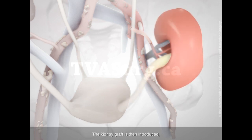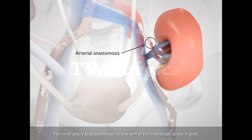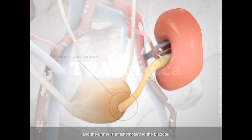The kidney graft is then introduced, and the renal vein is anastomosed to the external iliac vein. The renal artery is anastomosed to one arm of the innominate artery Y-graft, and the ureter is anastomosed to the bladder.